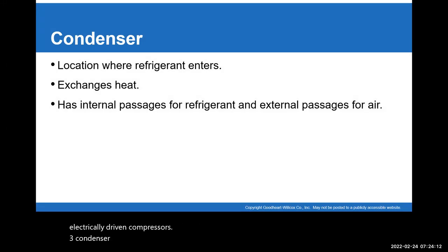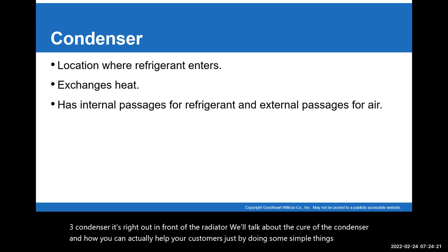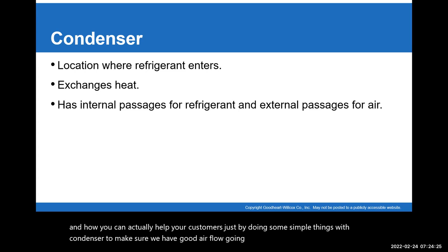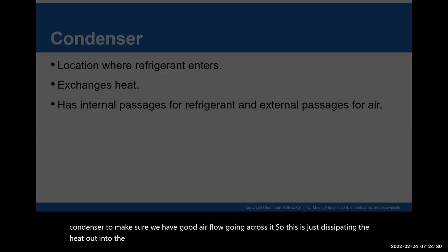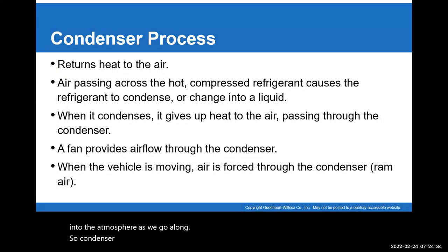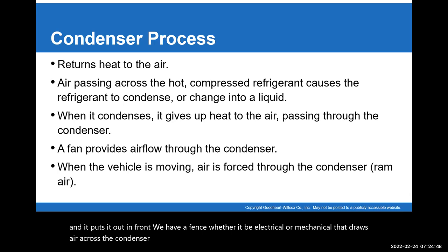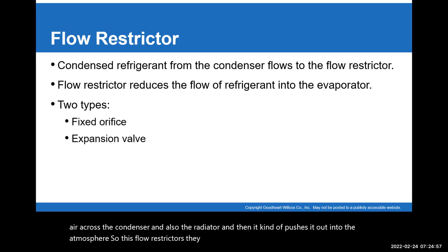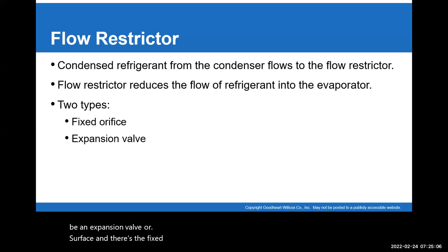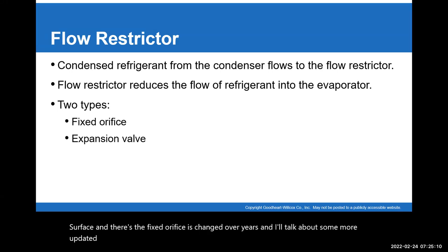The condenser is right out front of the radiator. We'll talk about how you can actually help your customers just by doing some simple things with the condenser to make sure we have good airflow going across it. It dissipates heat out into the atmosphere. The condenser process takes the heat absorbed from the evaporator and puts it out front. We have a fan circuit — whether electrical or mechanical — that draws air across the condenser and the radiator and pushes it out into the atmosphere. This flow restrictor is the expansion device, whether it be an expansion valve or a fixed orifice.